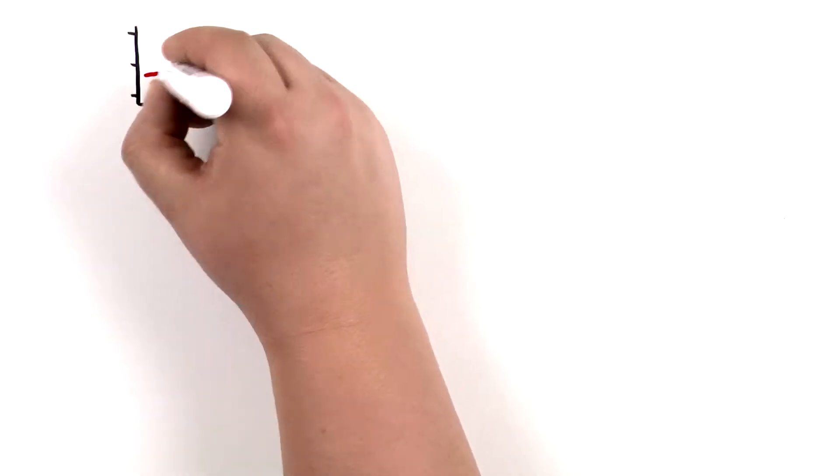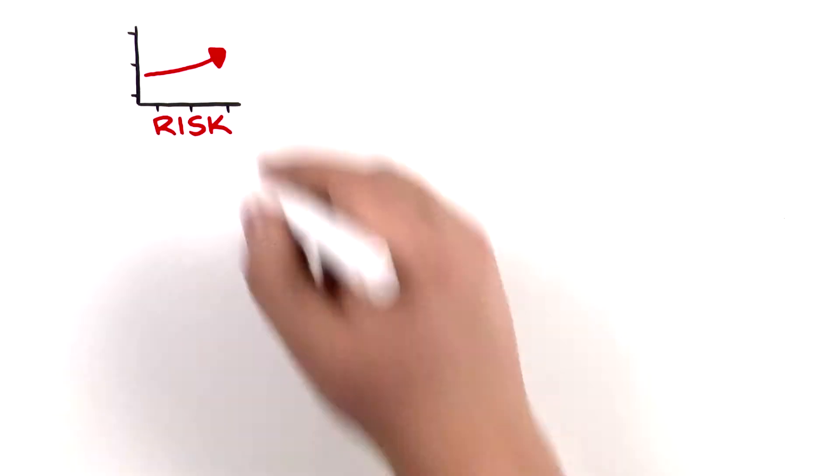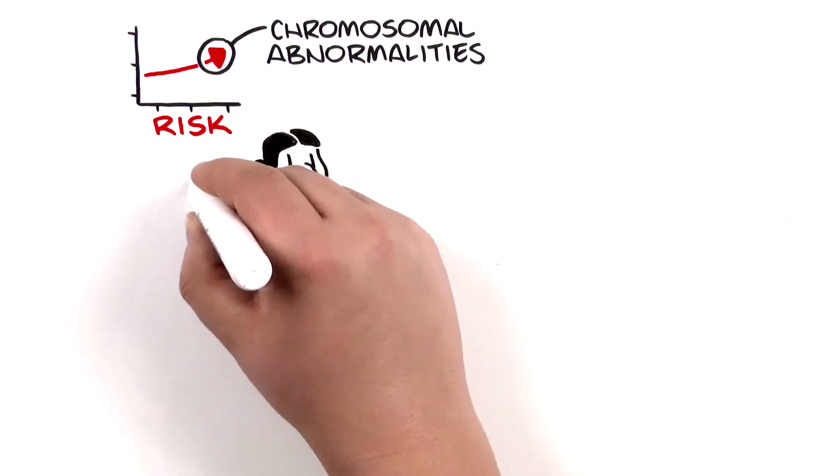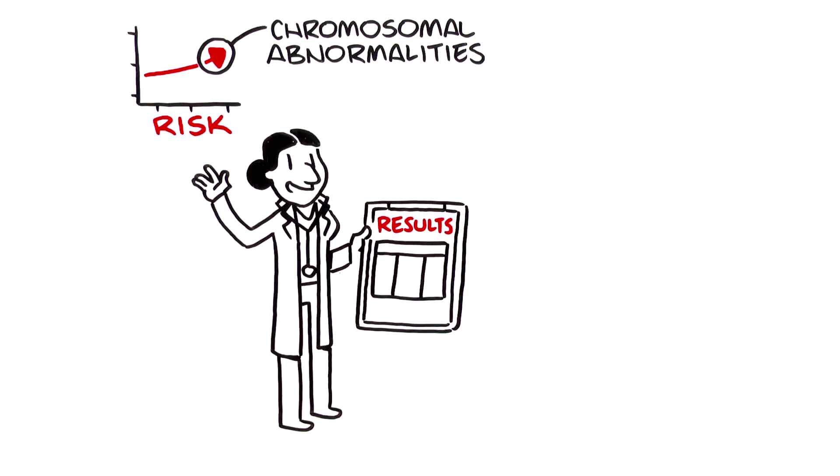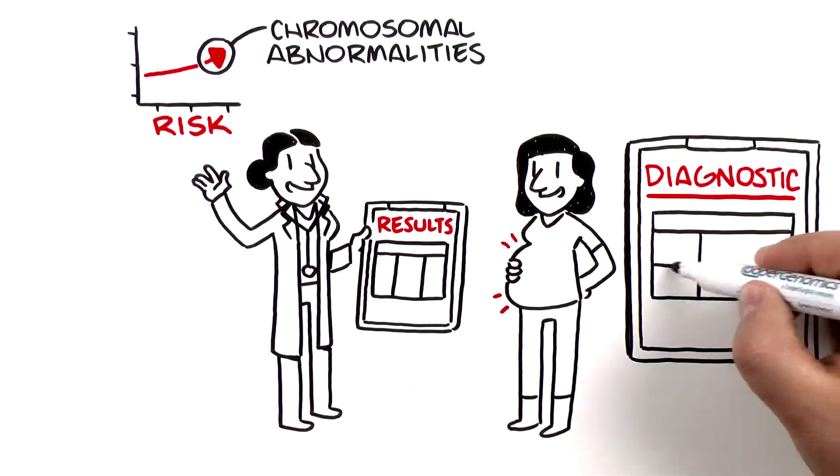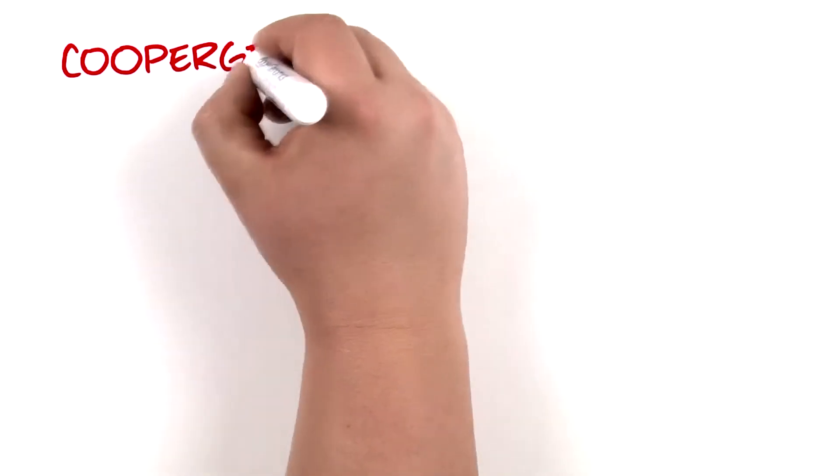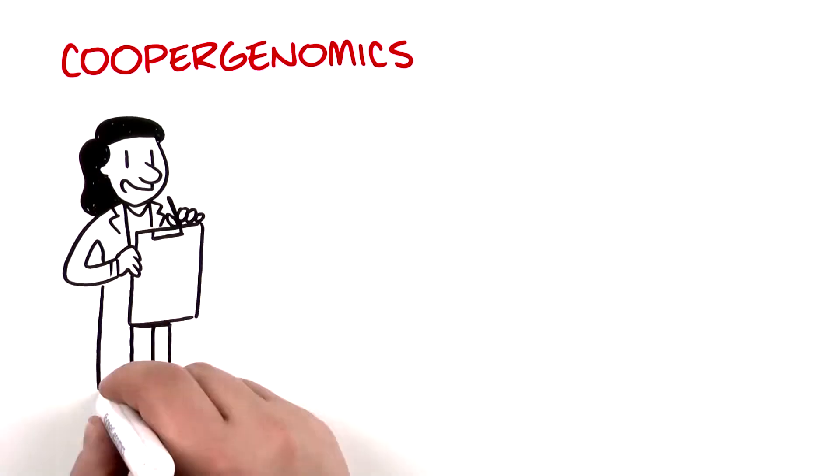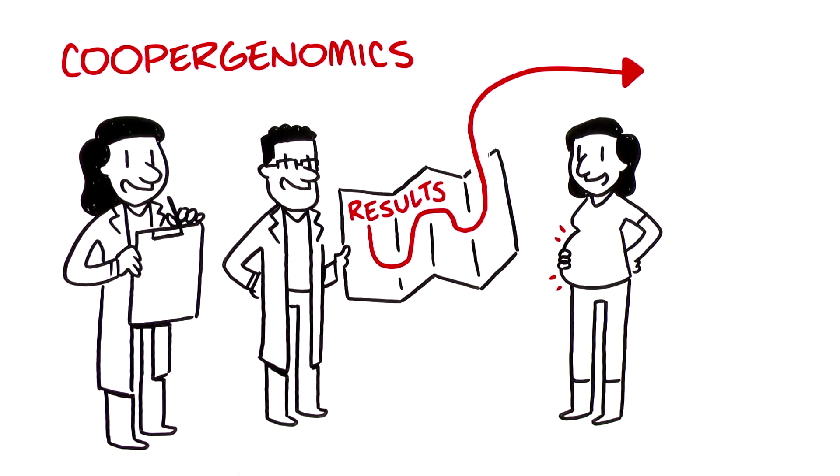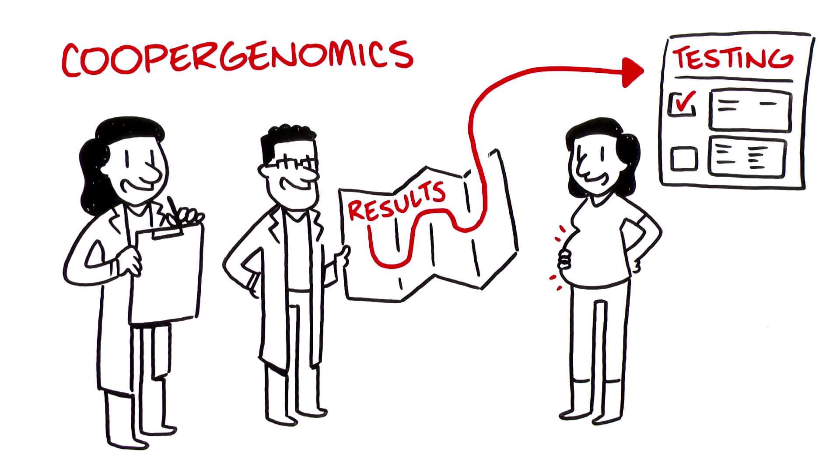If a high risk is detected, that is, if the screening found specific chromosomal abnormalities, your doctor will walk you through what the results mean to you and your baby, as well as further diagnostic testing options that will be recommended to you. Cooper Genomics also has a team of expert genetic counselors who are available to you and can guide you through your results and explain your follow-up testing options.